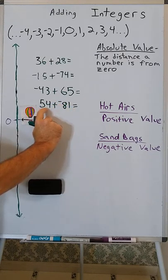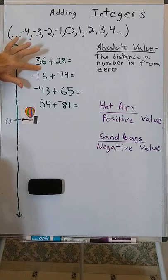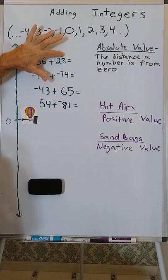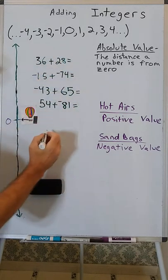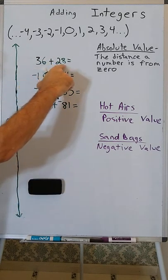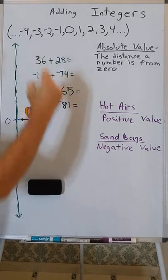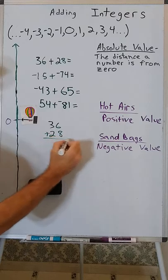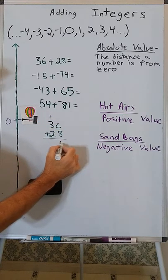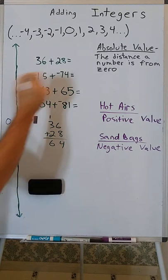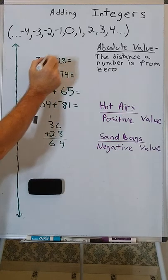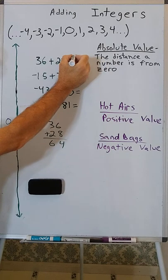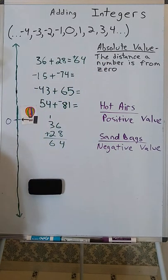What's happening in each case? Here we have hot air and hot air, so the balloon is going to go up and up even more. We add the two absolute values — the two distances from zero. The balloon goes up 36 and then 28 more, for a total of 64. So its value is going to be positive 64.